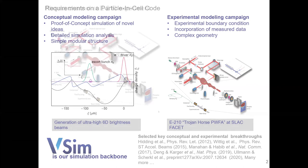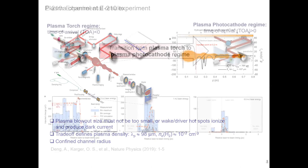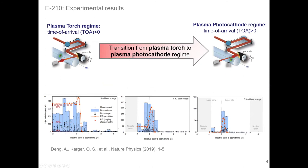In the E210 experiment, the key part — and real bottleneck — was the plasma channel, which was very tiny and limited achievable measurements. This tiny plasma channel, where the plasma wave wake was driven, essentially determined the blowout size, directly linked to the plasma wavelength. It had to be small enough but not so strong as to ionize the second neutral helium gas in the background or cause dark currents and hotspots. Modeling the experiment as accurately as possible in conjunction with the experimental campaign turned out to be very successful with VSim.